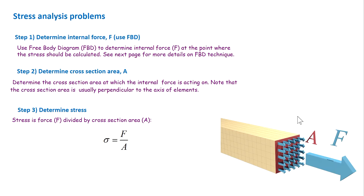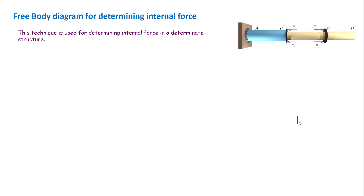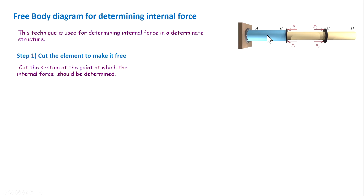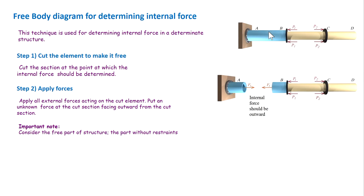Free body diagram is what we have already learned in statics — let's briefly review it here. It is a technique used for determining internal forces in a structure, and there are basically three steps. First, we cut the structure at the point where we want to determine the internal force. For example, if we want to determine the internal force in the blue element, we cut between A and B.